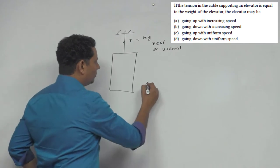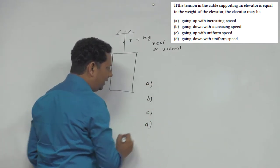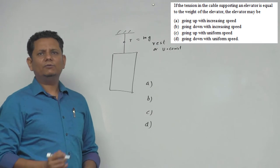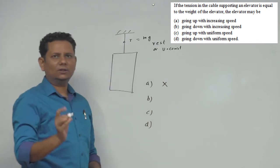If we look at the four options A, B, C and D, the first option is going up with increasing speed. In this case there will be acceleration, so this is not the correct choice.